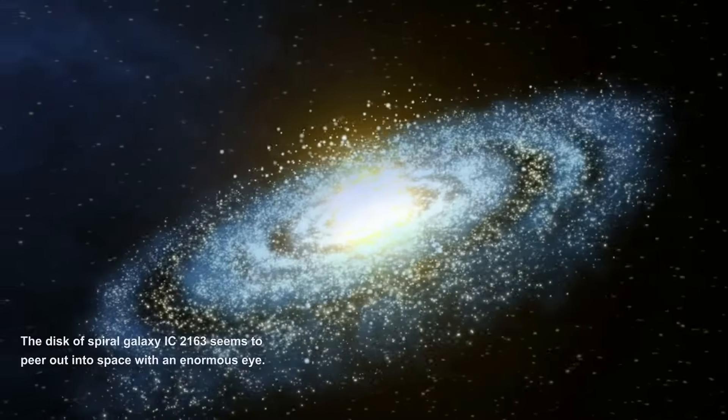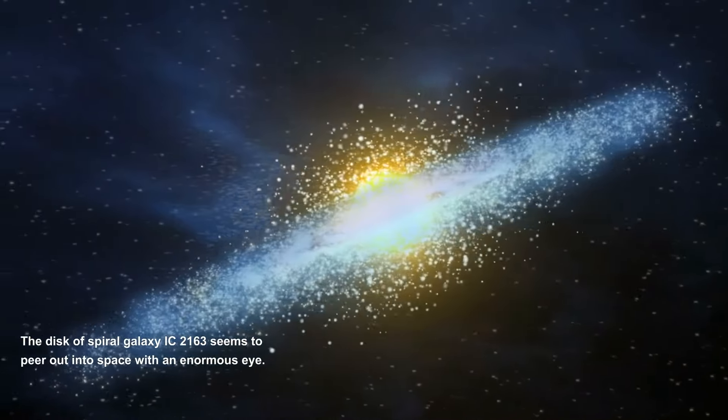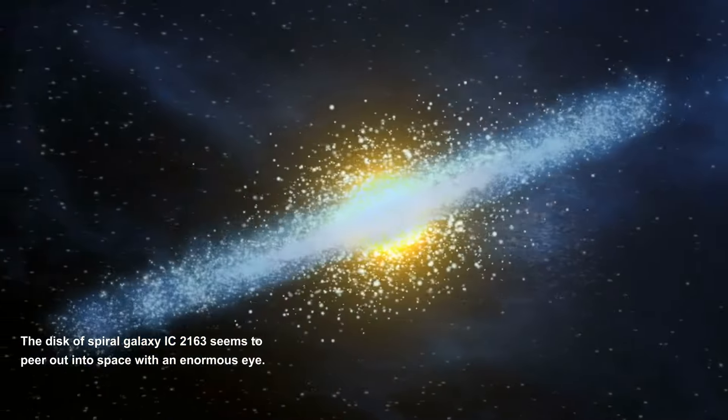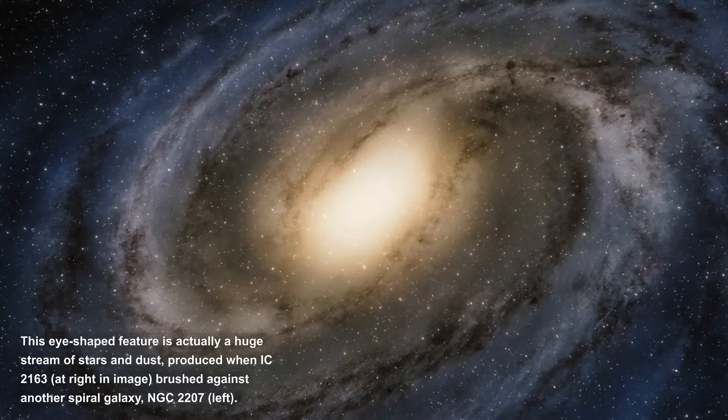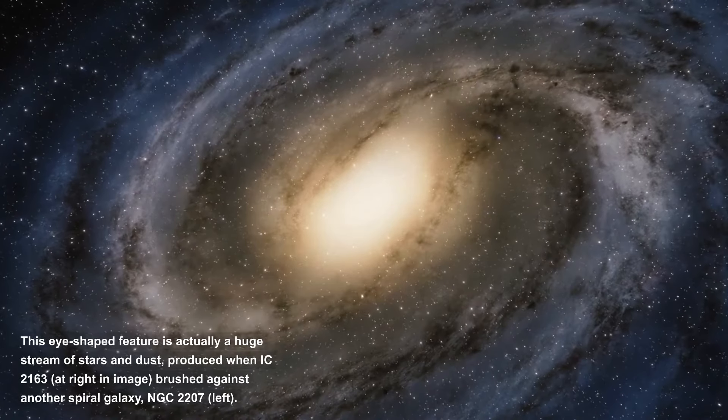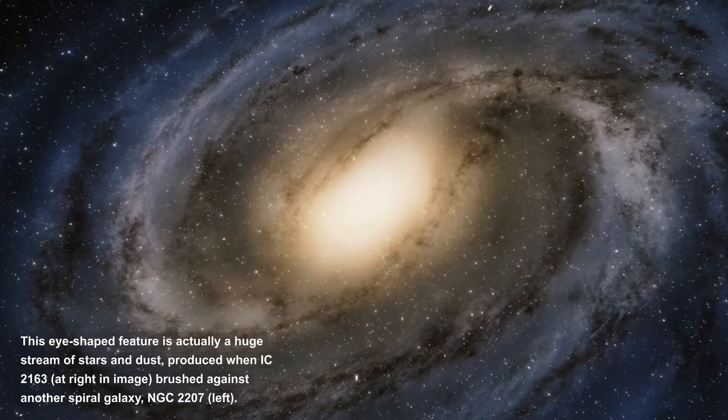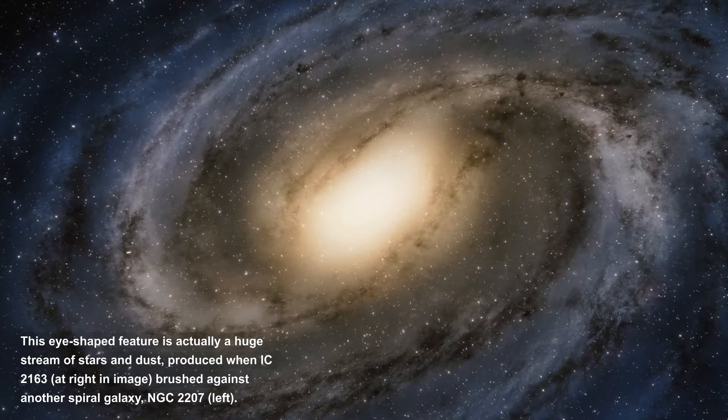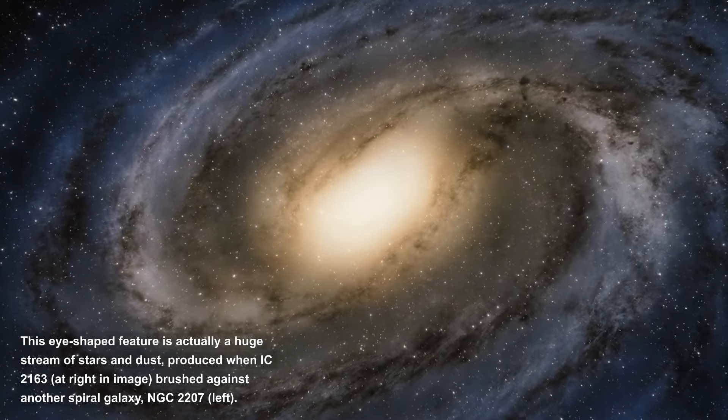The Eye. The disk of spiral galaxy IC 2163 seems to peer out into space with an enormous eye. This eye-shaped feature is actually a huge stream of stars and dust, produced when IC 2163, at right in image, brushed against another spiral galaxy, NGC 2207, left.